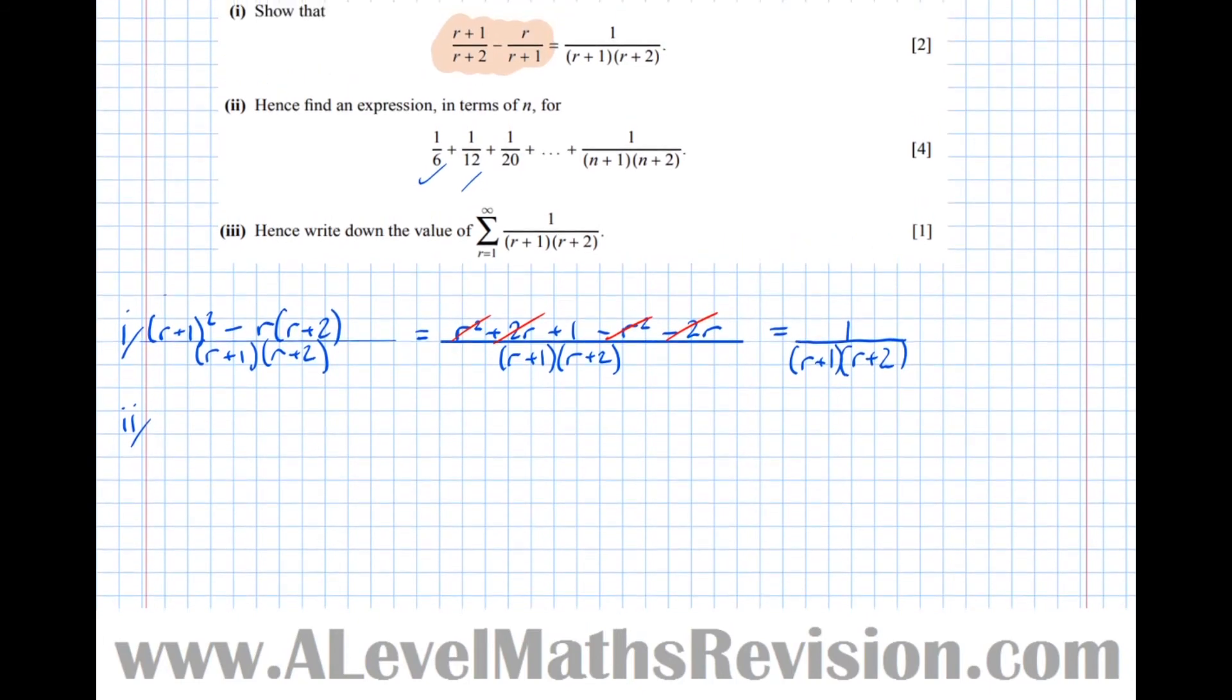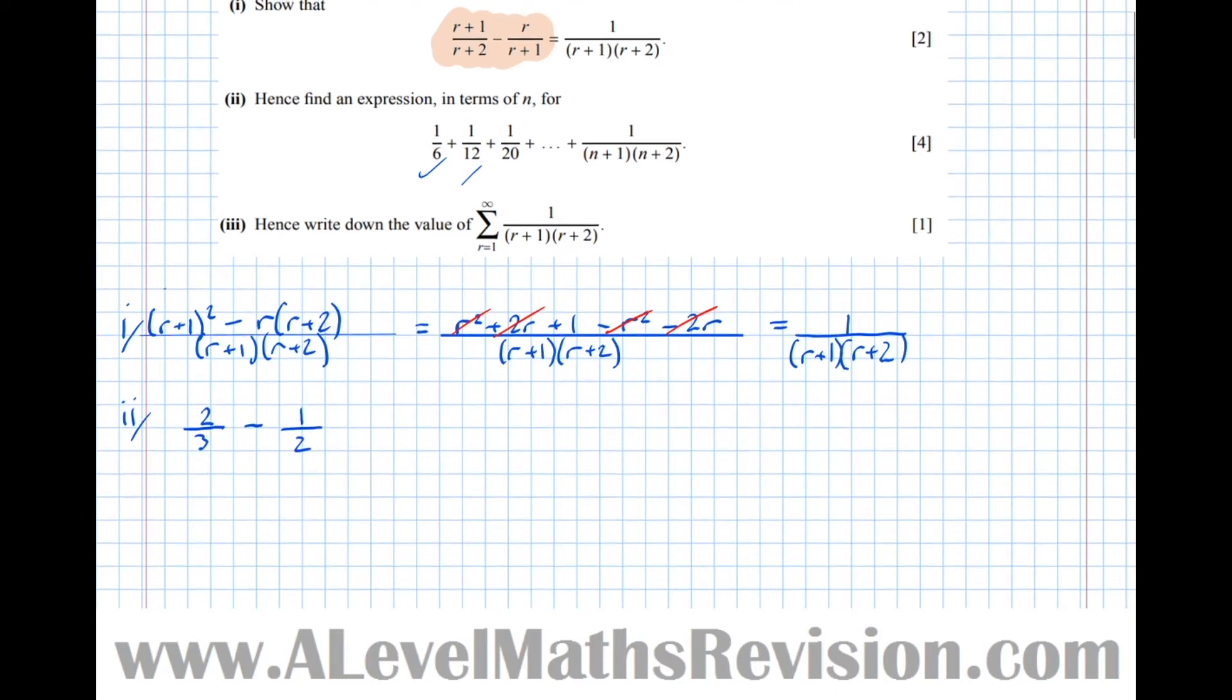So for r equals 1, let's sub it into this left-hand expression. So I get 1 plus 1 on top, which is 2, and 1 plus 2 on the bottom, which is 3. Take 1 over 2, no joy yet. But what I'm going to do now, and what I'm going to encourage you to do, is to write them not in a row now, but in columns.